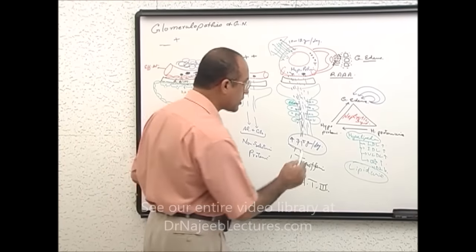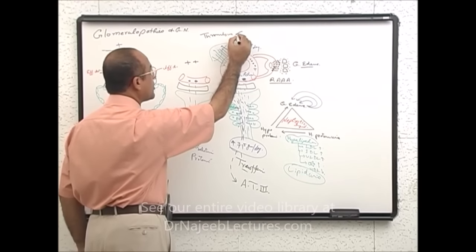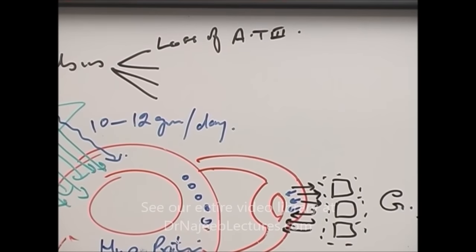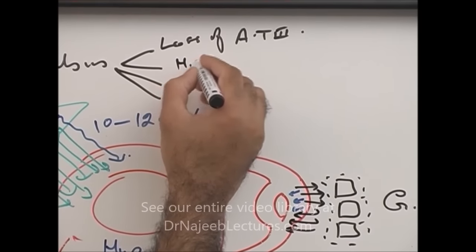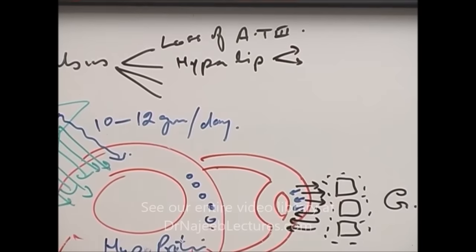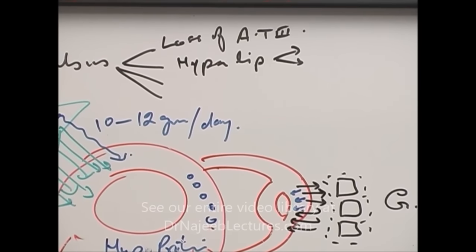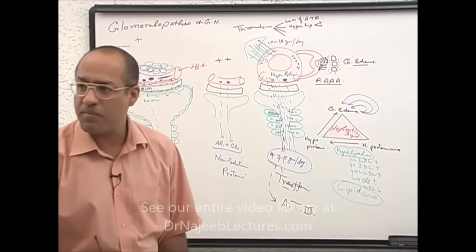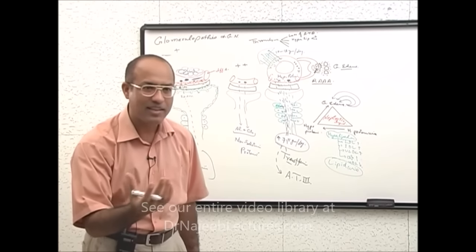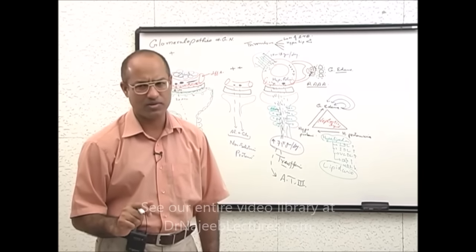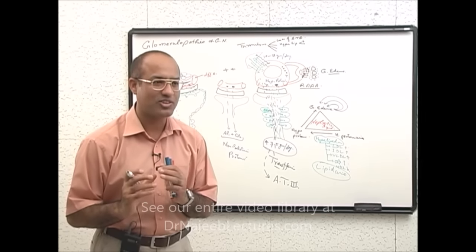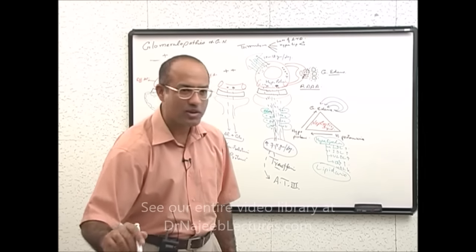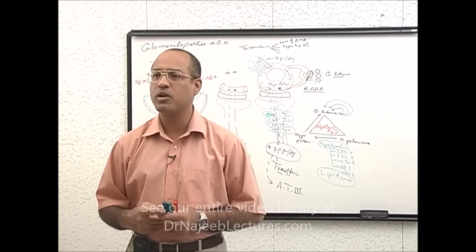There are multiple reasons for thrombogenesis in these patients: number 1 is loss of antithrombin 3 or other anticoagulant proteins; number 2 is hyperlipidemia — lipids disturb platelet membranes, making platelets sticky, and also disturb endothelial membranes making them thrombogenic; number 3 is hemoconcentration causing stasis, which further adds to thrombogenesis.